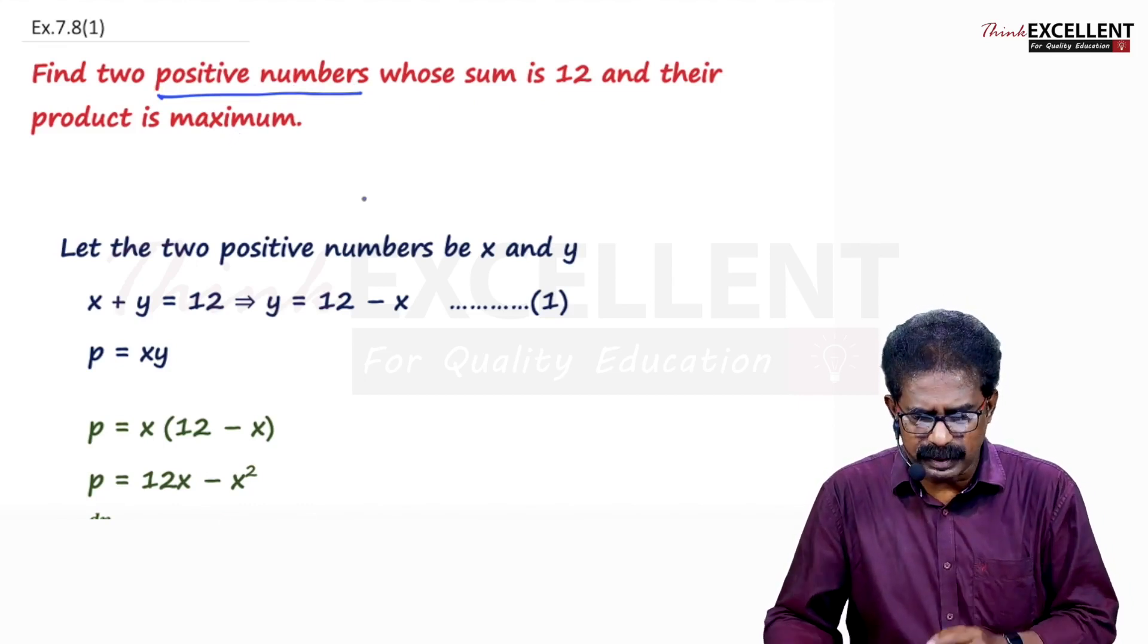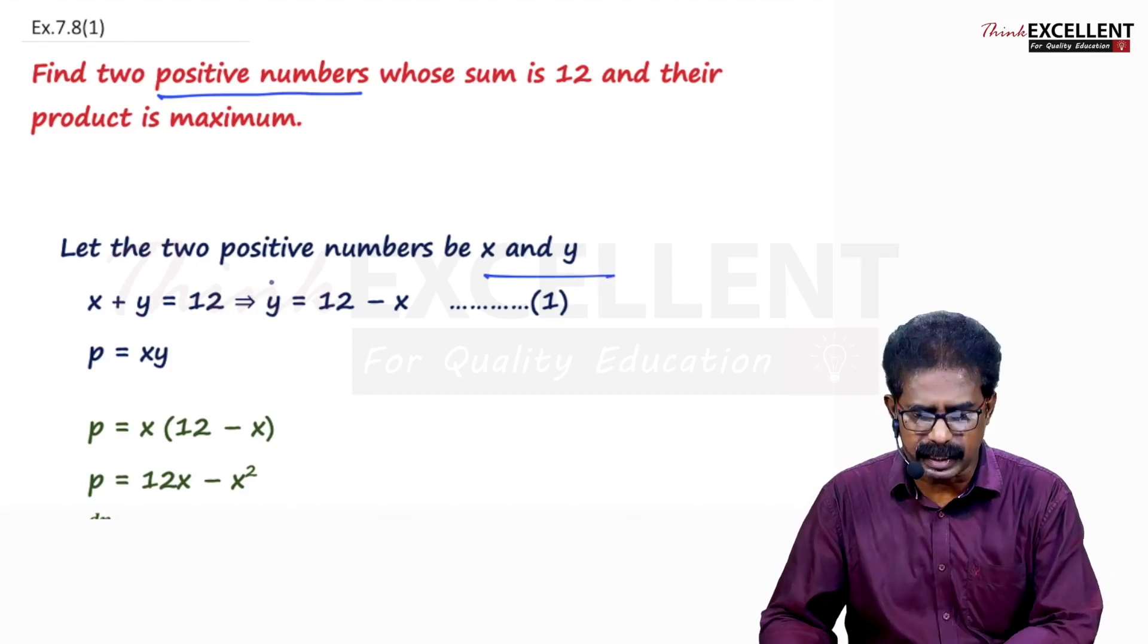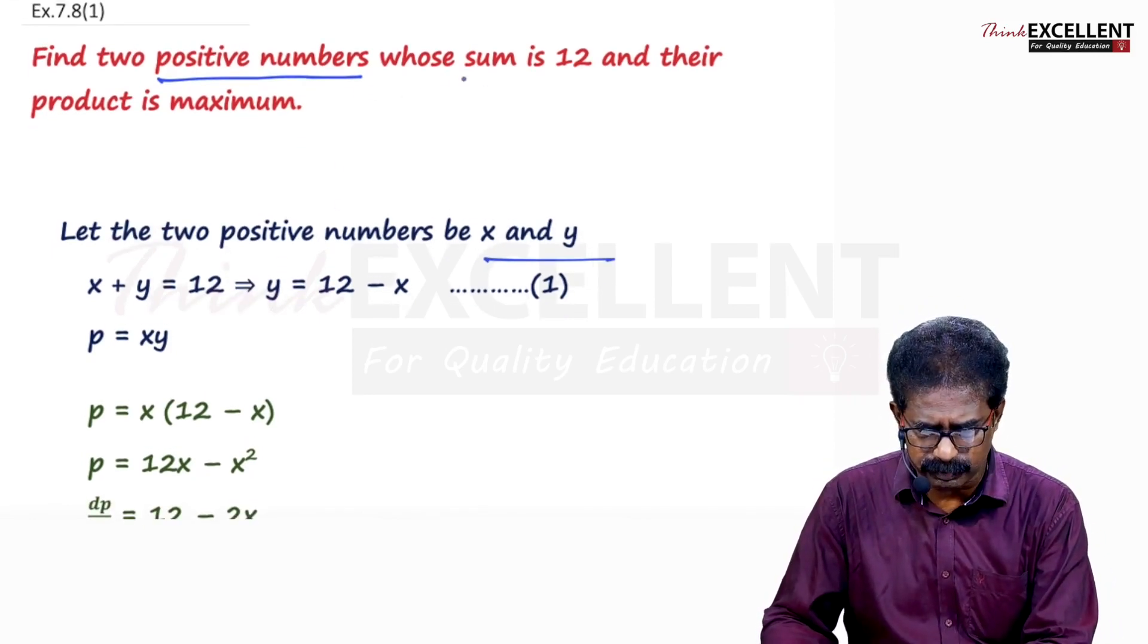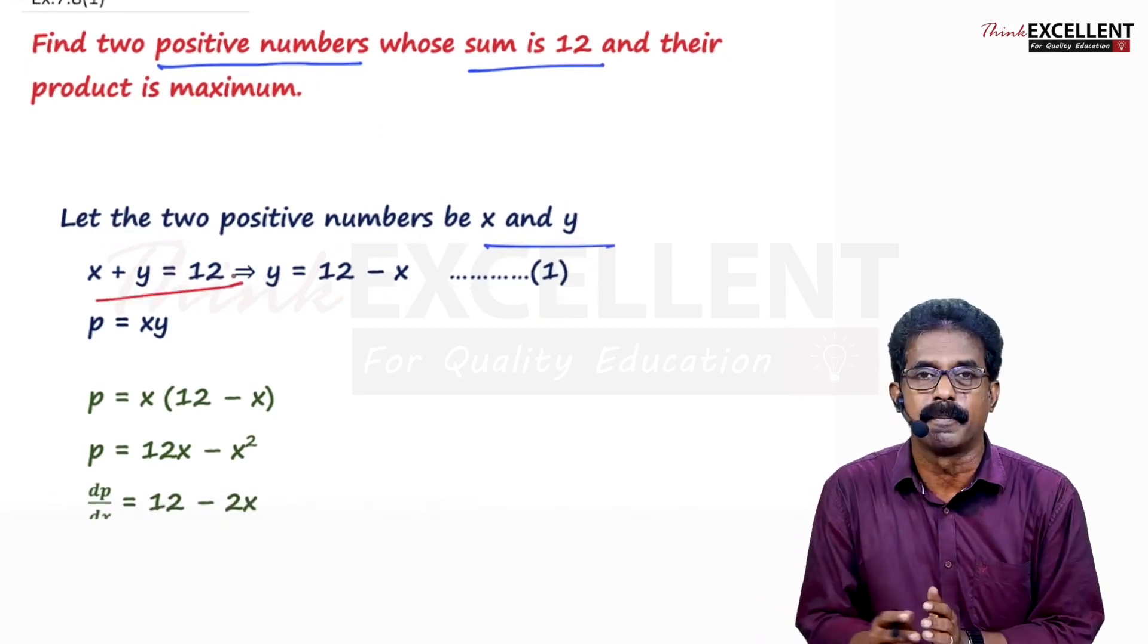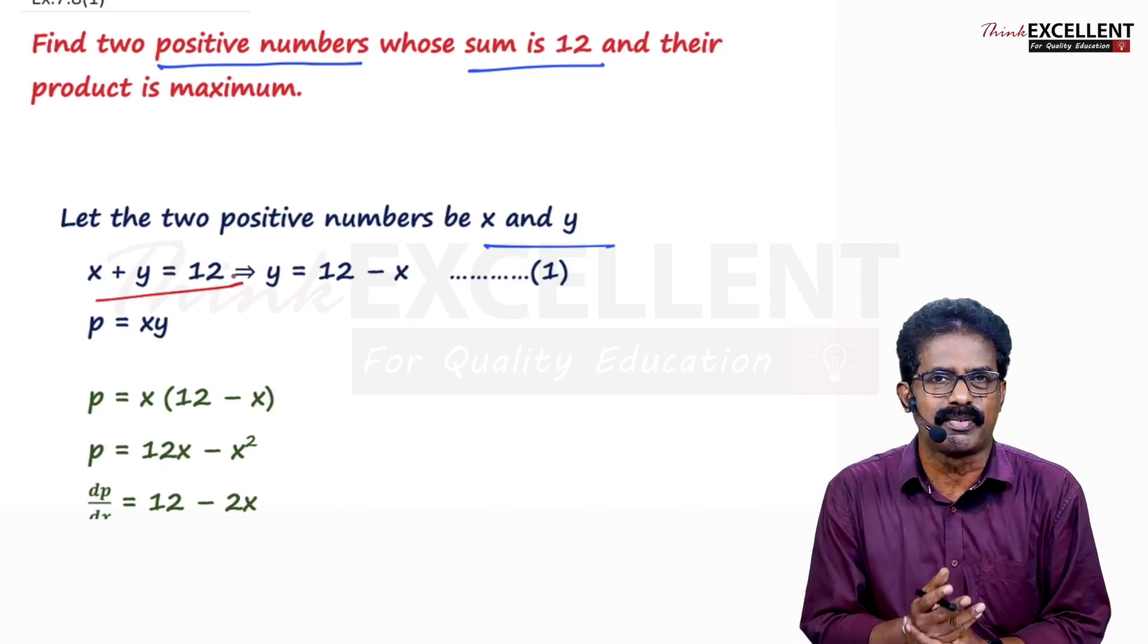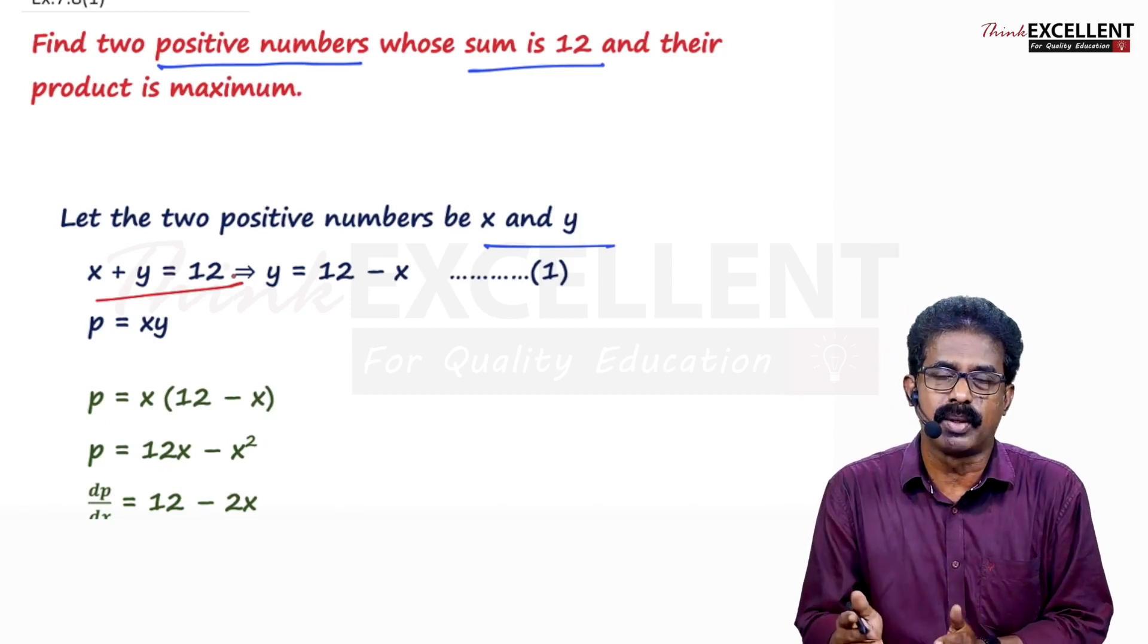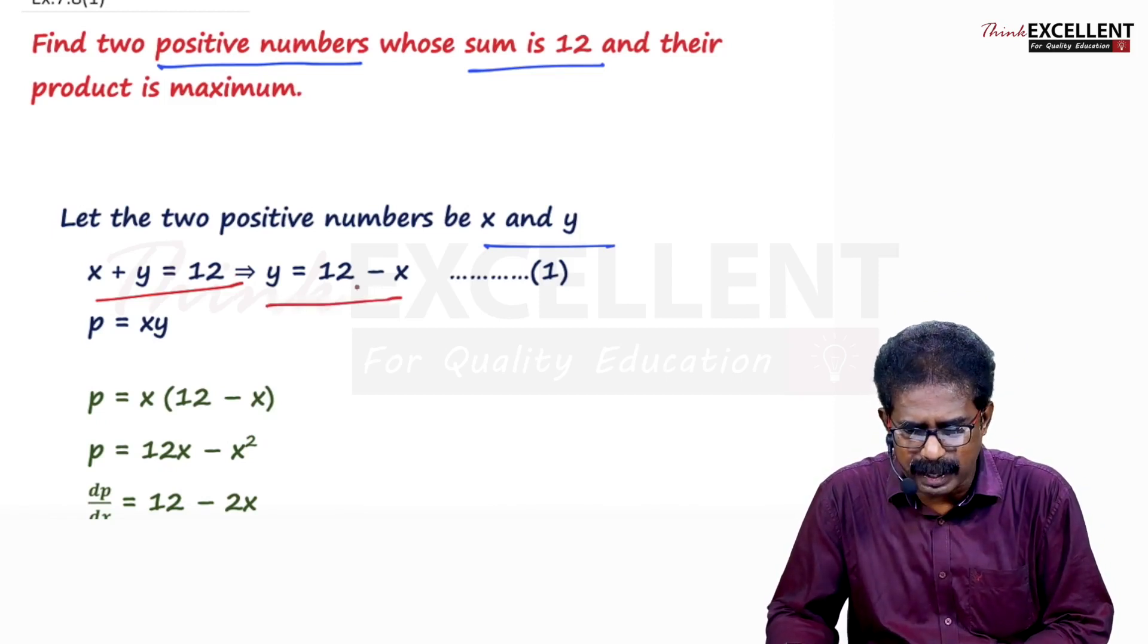Find 2 numbers. I am taking the numbers as X and Y. Let the 2 positive numbers be X and Y. What is given here? Sum means 12. Sum means X plus Y. X plus Y equal to 12. Find any one letter from here. So Y equal to 12 minus X.